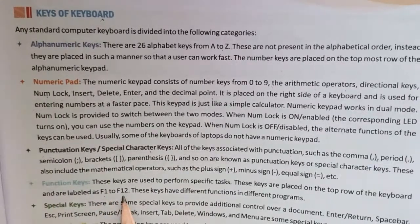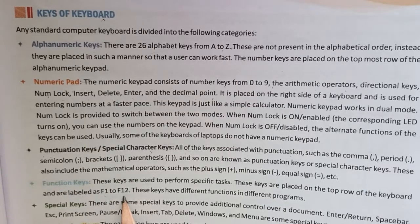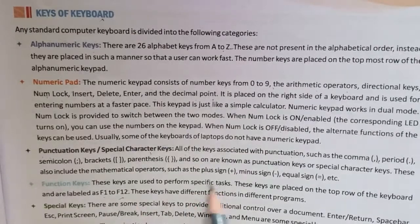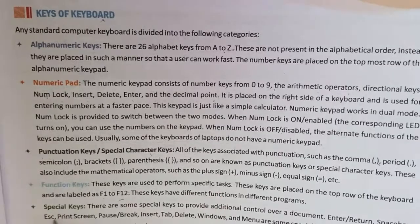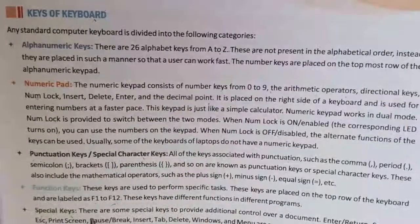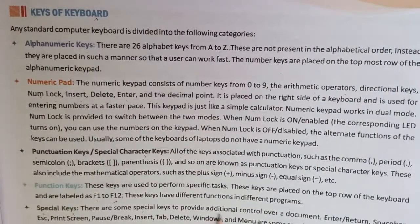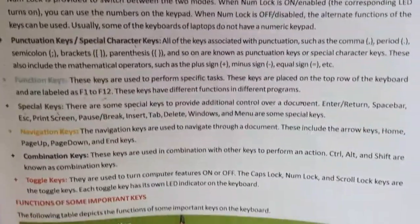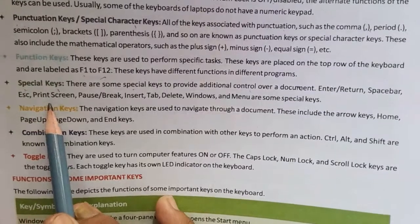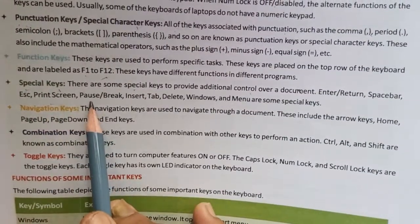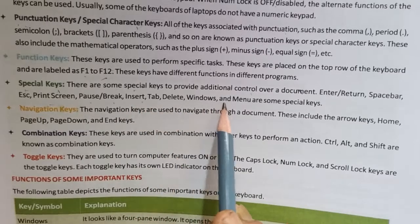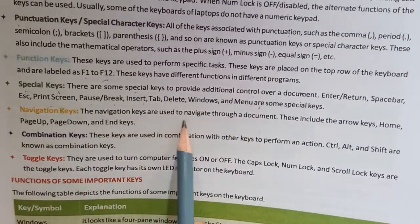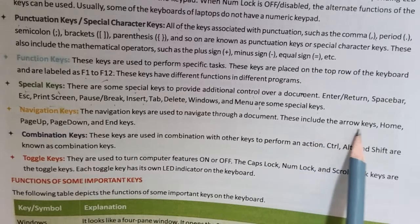Function keys are F1 to F12 — there are 12 function keys on the keyboard, used to perform specific tasks. Special keys provide additional control over the document. These include Enter, Return, Space Bar, Escape, Print Screen, Pause Break, Insert, Tab, Delete, Windows key, and Menu key. Navigation keys are used to navigate through the document.